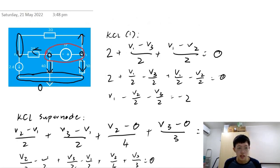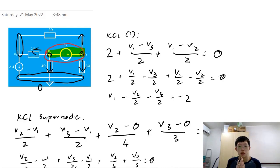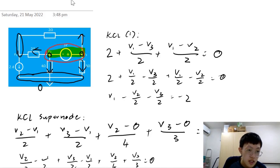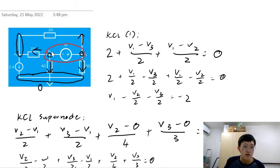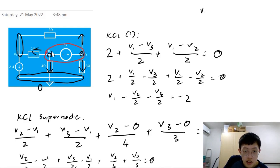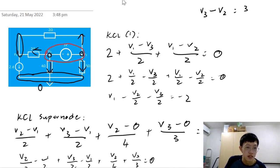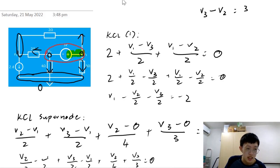The last equation has to do with the voltage source itself. A voltage source determines the difference in potential of its two terminals, and by that definition we can create another equation. The positive terminal is V3 and the negative terminal is V2, so V3 has a higher voltage value than V2. Therefore, V3 minus V2 equals 3 volts. The terminals do matter, so plus comes first.